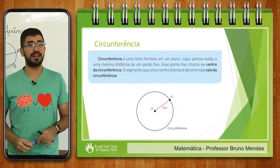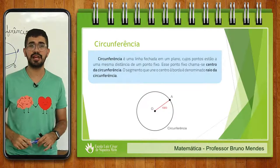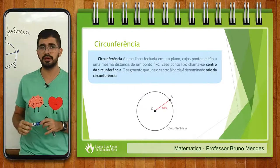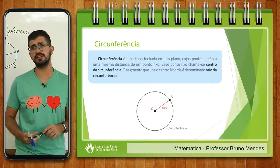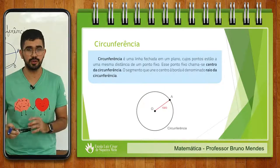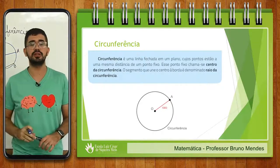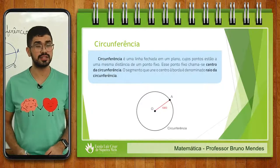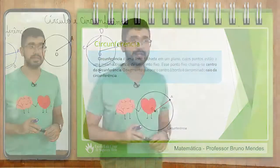Primeiro assunto que nós vamos falar é sobre a circunferência e depois nós vamos tratar sobre o círculo. O que é uma circunferência? Preste bastante atenção. Circunferência é uma linha fechada em um plano, cujos pontos que estão nessa borda estão à mesma distância de um ponto fixo. Esse ponto fixo de uma circunferência nós chamamos de centro. O segmento que une o centro à borda de uma circunferência é chamado de raio.